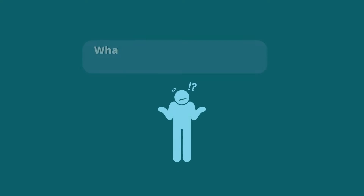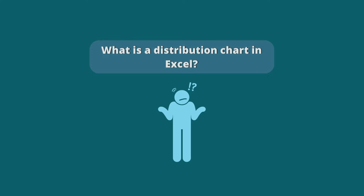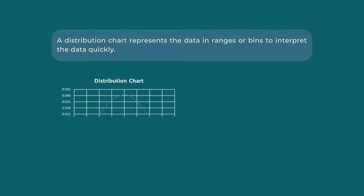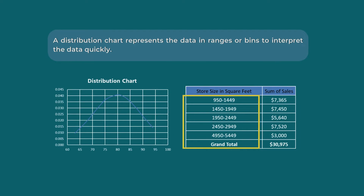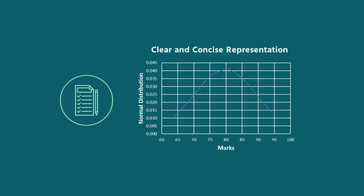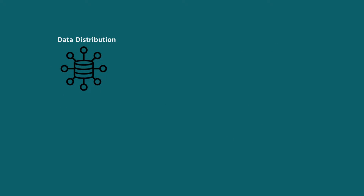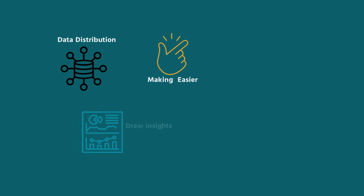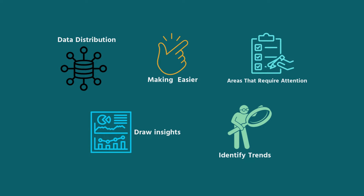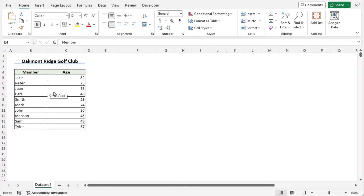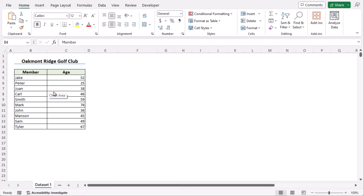A distribution chart in Excel represents the data in ranges or bins to interpret the data quickly. It offers a clear and concise representation of data distribution, making it easier to draw insights, identify trends, and areas that require attention. For this tutorial, we'll be using Microsoft Excel 365. Without any further discussion, let's get started.